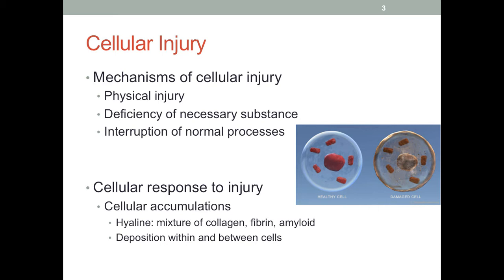There is more than one mechanism through which cellular injury can occur. One is physical. The second is a deficiency of a necessary substance — for example, a nutrient deficiency could lead to a lot of damage to different cells. Interruption of normal processes can also lead to cellular injury. Cells respond to injury in many ways, but the overall theme is that these cells will begin to make molecules that either they do not make under normal conditions, or that they do not make as much of under normal conditions. These newly synthesized molecules in response to cell injury accumulate within and between the cells.